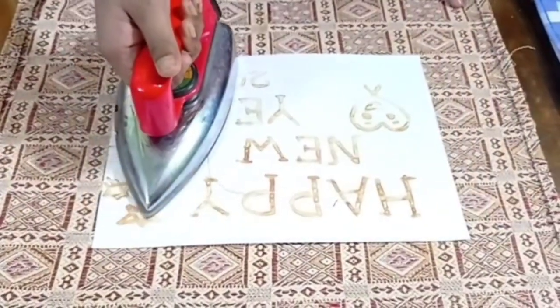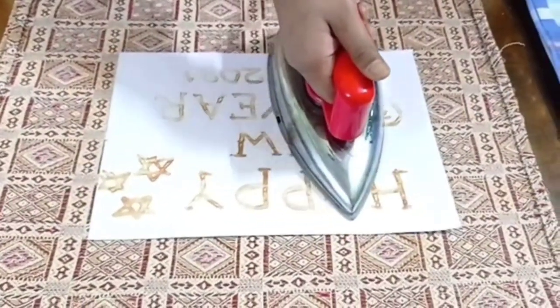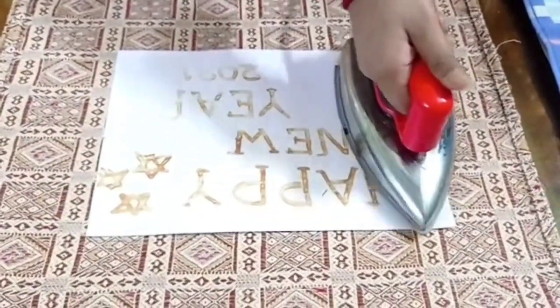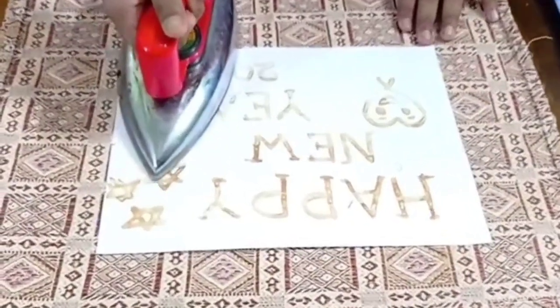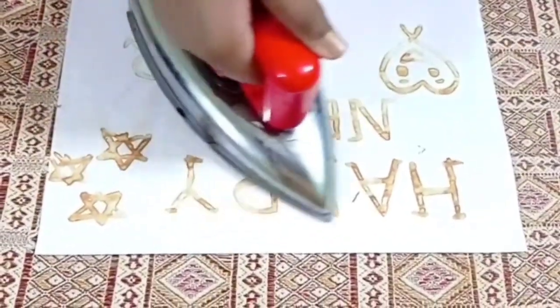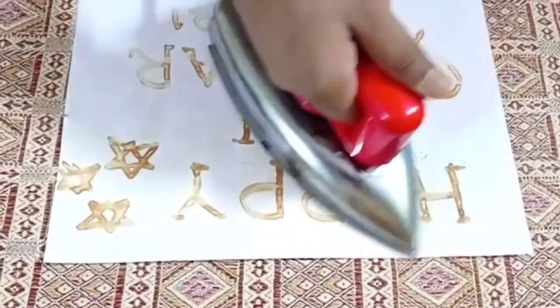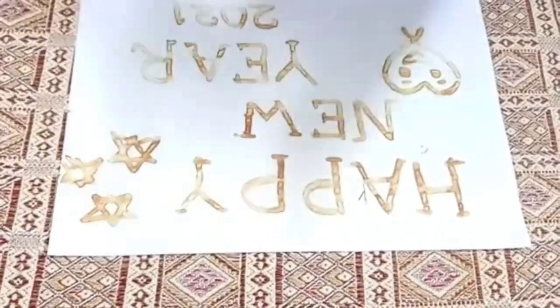You can see my writing is becoming dark brown in color, revealing my message. This happens because the lemon juice undergoes oxidation at a temperature lower than the paper, turning a dark brown color. Happy New Year!